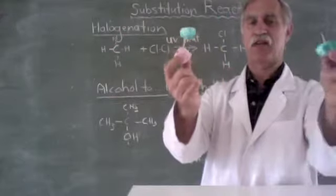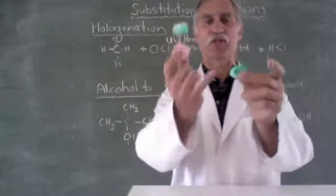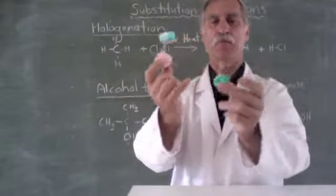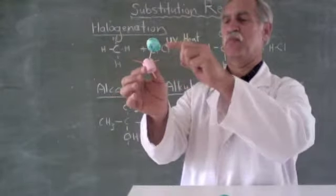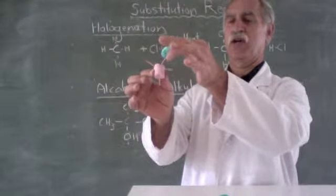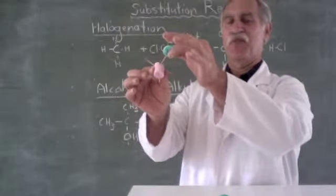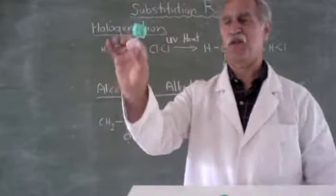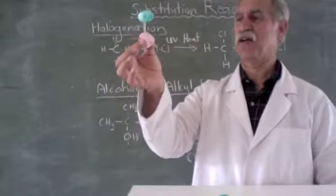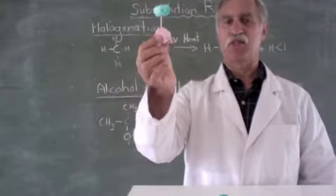So there we go. HCl is our one substance. And our other is our methane with a chlorine, or one chloromethane. So there is our substitution.